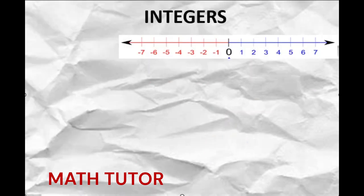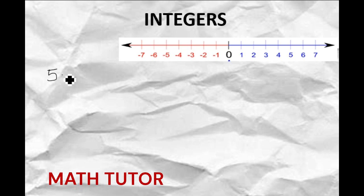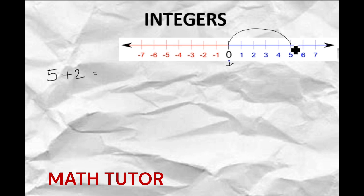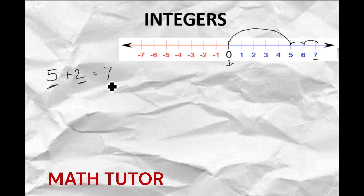Let us understand the operations of integers using the number line. Suppose we take two numbers: 5 plus 2. You already know how to add. Starting from 0, we go to the right 5 steps, and then 2 more steps — 1, 2. So we got 7. So 5 plus 2 equals 7.